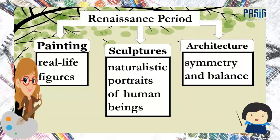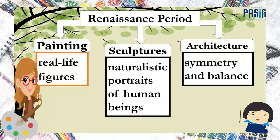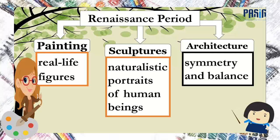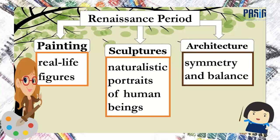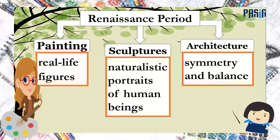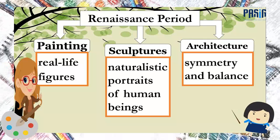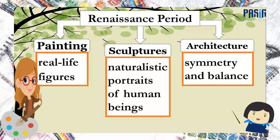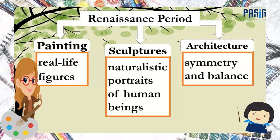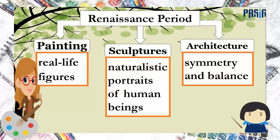Renaissance art was characterized by accurate anatomy, scientific perspective, and deeper landscape. Here we break down the unique features of different art forms from the Renaissance period. In paintings, you can easily notice the real-life figures of their artwork. In sculptures, you can see the naturalistic portraits of human beings. In architecture, you'll be amazed by its symmetry and balance. As the classical Greeks believed in the harmonious development of the person, the Renaissance held up the idea of the well-rounded man, knowledgeable in fields such as philosophy, science, arts including painting and music, and who applies his knowledge to productive and creative activity.